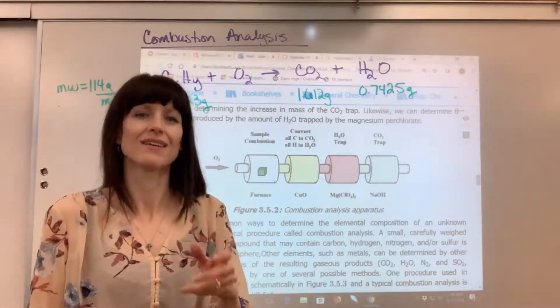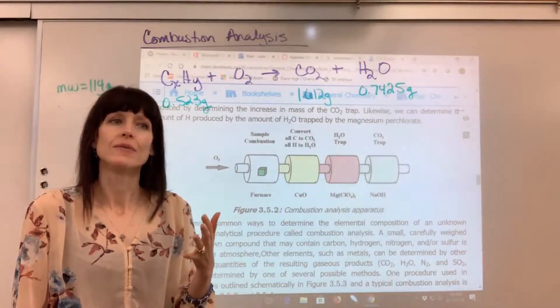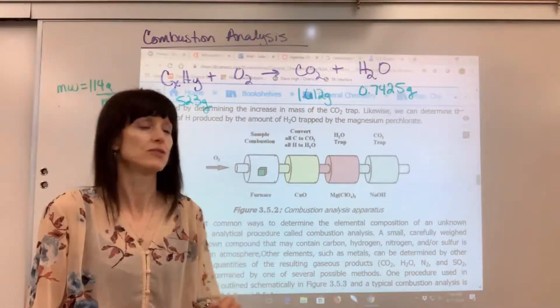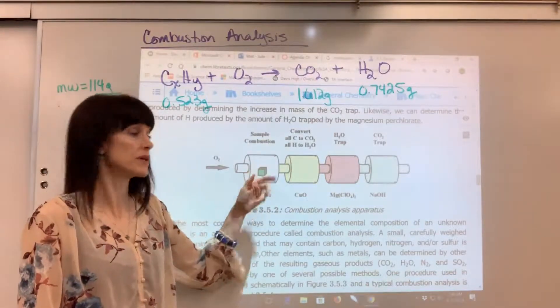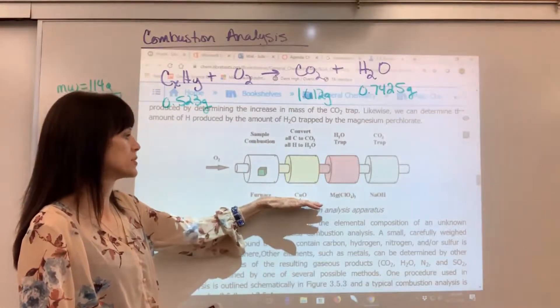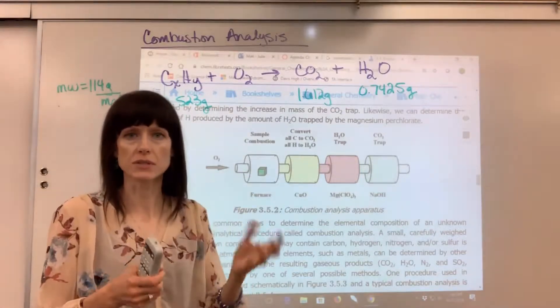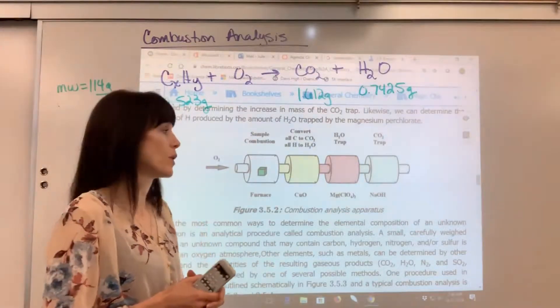So here's our trick. Here's the method to determine the number of carbons and hydrogens. You take the sample right here and you burn it in a furnace. This copper oxide helps convert all of the carbon to CO2 and all the hydrogen to water.